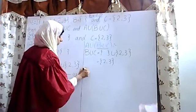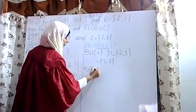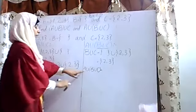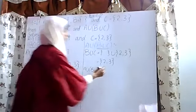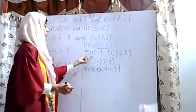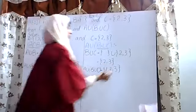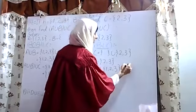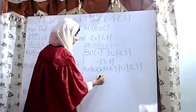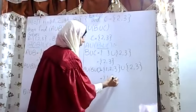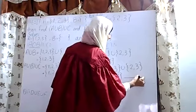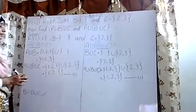Now A union (B union C): set A is {1, 2, 3}, and B union C is {2, 3}. We combine both sets. The answer is {1, 2, 3}. Students, this is solved. The answer is {1, 2, 3}, taking all elements of both sets without repetition.